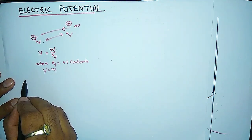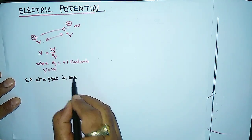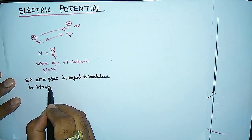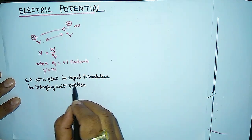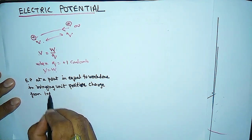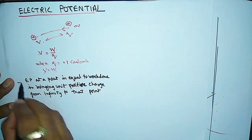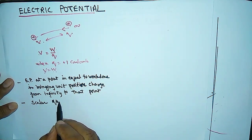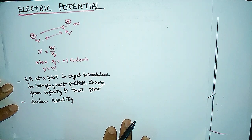Electric potential at a point is defined as the work done in bringing a unit positive charge — where unit positive charge means Q is equal to plus 1 coulomb — from infinity to that point. Remember, it is a scalar quantity; it does not depend on direction, only on magnitude.